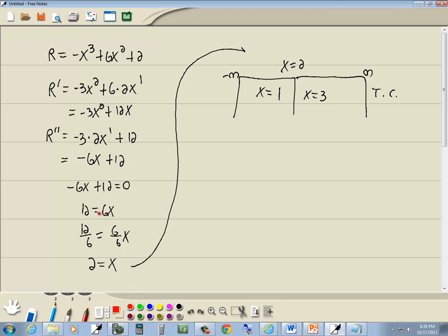Now we want to plug those into our second derivative, which is right here. I probably don't need a calculator for this, it's pretty straightforward. So I've got negative 6 times 1 plus 12, and negative 6 times 3 plus 12. Negative 6 times 1 is negative 6, plus 12 is positive, so it's concave up. Negative 6 times 3 is negative 18, plus 12 is negative, so that's concave down.